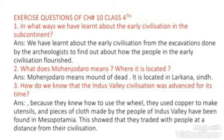What does Mohenjo-Daro mean? Where is it located? Mohenjo-Daro means 'mound of dead.' It is located in Larkana, Sindh.